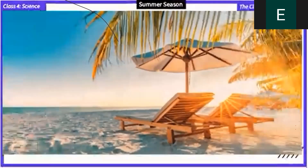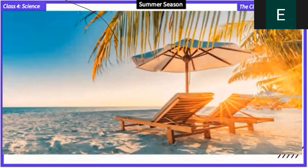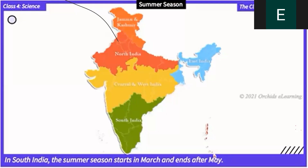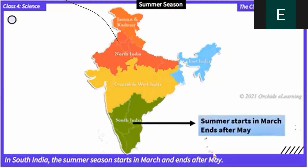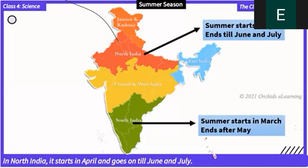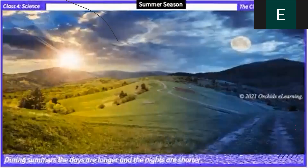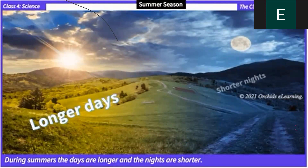Summer season: in south India the summer season starts in March and ends after May. In north India it starts in April and goes on till June and July. In summer it is hot and dry in almost all parts of India except the mountains. During summers the days are longer and the nights are shorter.